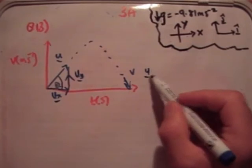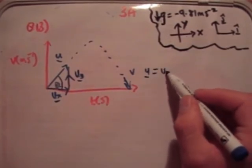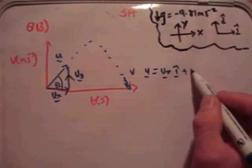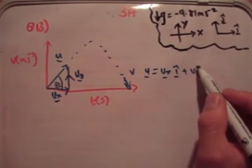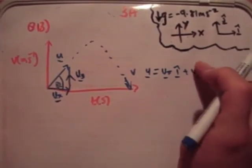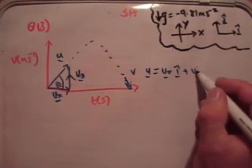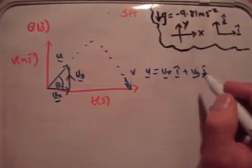When you add u-sub-y and u-sub-x together you get the vector u. Just to write that explicitly, u is equal to u-sub-x i-hat plus u-sub-y j-hat.